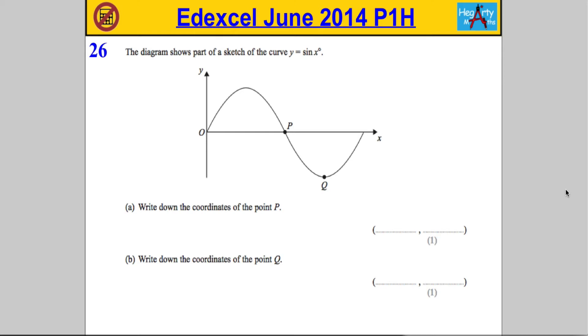Okay, so final question of this paper. We're given a diagram that shows part of a sketch of the curve y equals sine x, and we're asked to write down the coordinates of the point P.